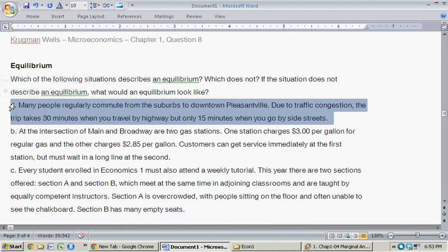Then presumably drivers and commuters are trying to minimize the time they spend. And so those highway drivers, if they simply switch to go to the side streets, they'd be able to save some time. And so this is not an equilibrium.